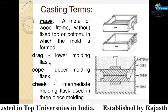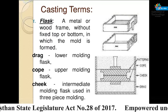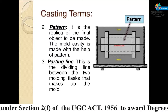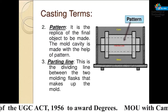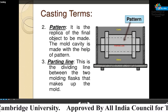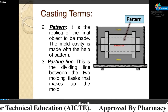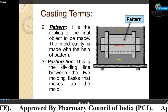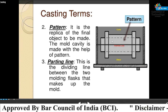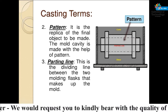The second term of casting is pattern. The pattern is placed in between the molding box in the shape of the required piece, and is made by wood, metal, etc. The pattern is the replica of the final object to be made. The mold cavity is made with the help of the pattern.